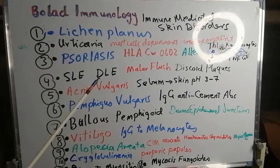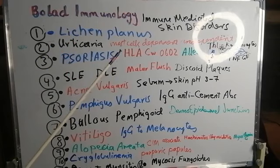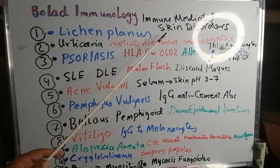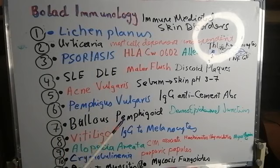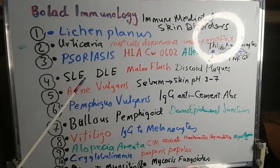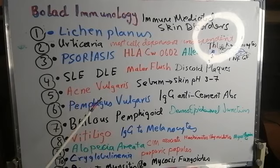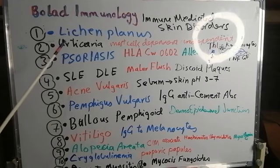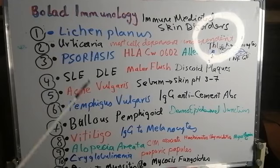In the oral cavity, lichen planus leads to painful, shallow ulcers. In the skin, it leads to papules — purple papules or coalesced papules.